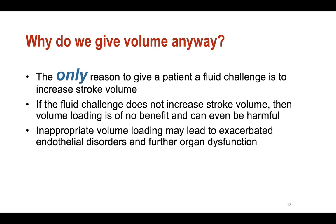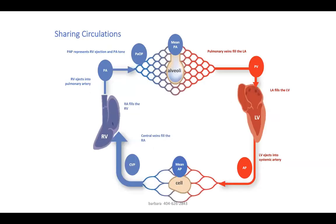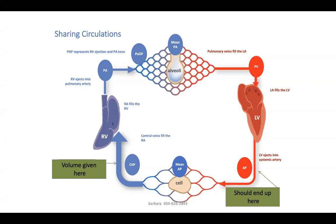You only give volume because you want to increase stroke volume - you think it's to increase blood pressure, but it's actually to increase stroke volume. As you increase stroke volume, systolic pressure and mean pressure will go up. If the fluid you're giving doesn't increase stroke volume, then fluid loading is probably not the answer. Volume given in the vein should always end up in the artery - your CVP might go up, or it might come down because heart rate came down, but your stroke volume or systolic arterial pressure should always go up.